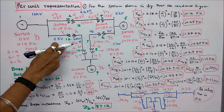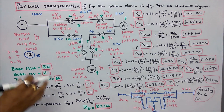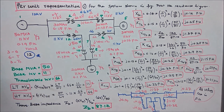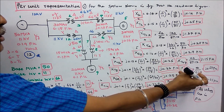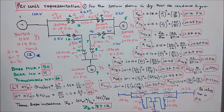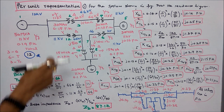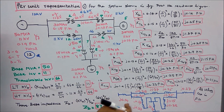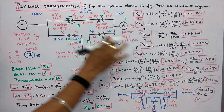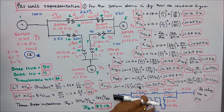For the 10th component (transformer), the value is already found and is the same as before. For the 11th component (transmission line 3): 50 / 87.12 = J0.57 per unit. The remaining transformers also equal J0.25 per unit. This completes the reactance diagram — all values are now in per unit.